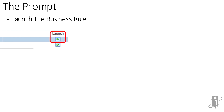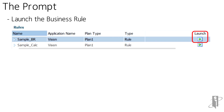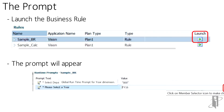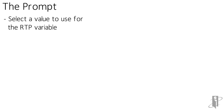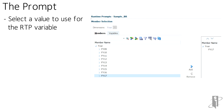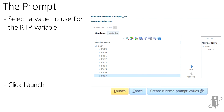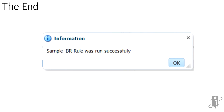Once you save and deploy the business rule, you can launch it. As long as you don't have IsHidden selected, the prompt will appear. You can click on the member selector to select a different member or leave the default value, then click Launch. The business rule ran with a runtime prompt.